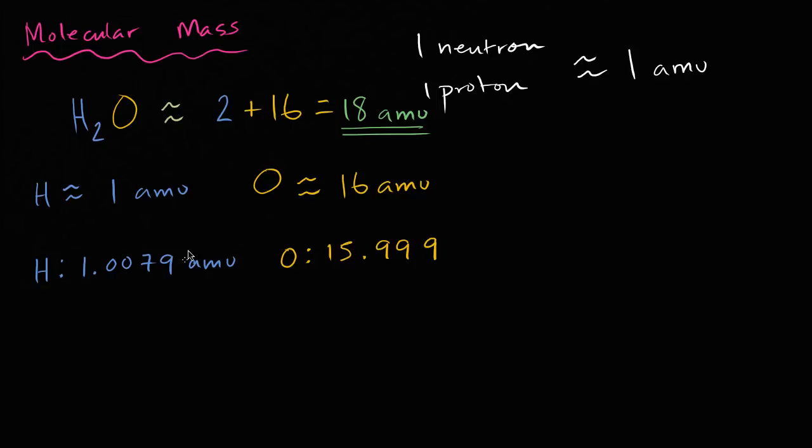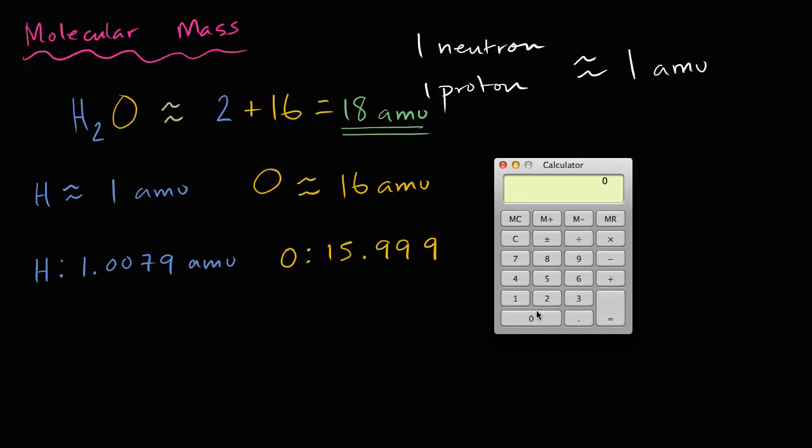And so if you wanted to get a more precise number here, let's get a calculator out. So if I get my calculator, I'm going to have 2 times 1.0079 is equal to, and then to that I'm going to add, so plus 15.999 gets us to, and let's see.